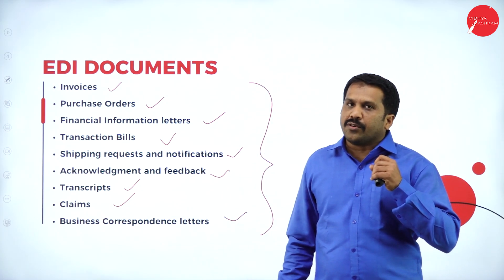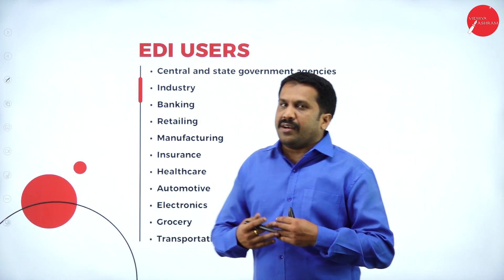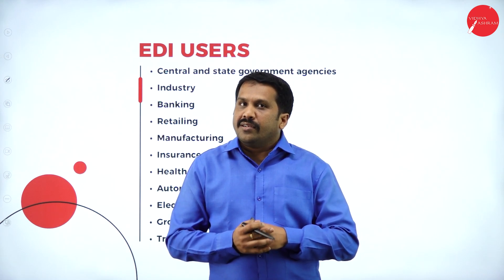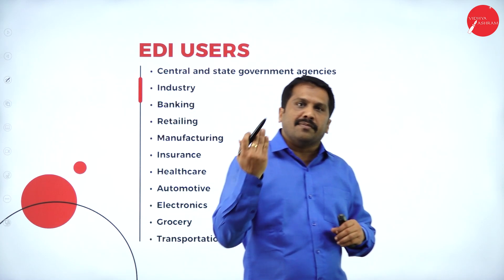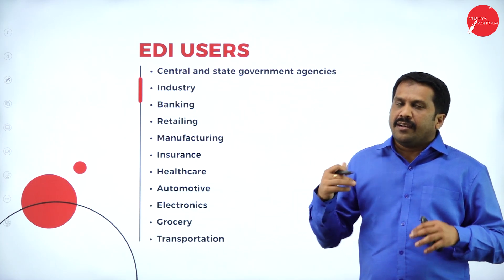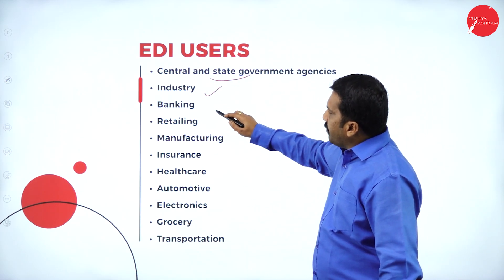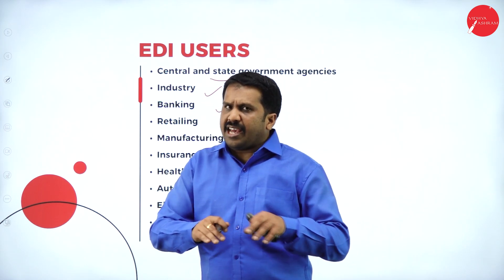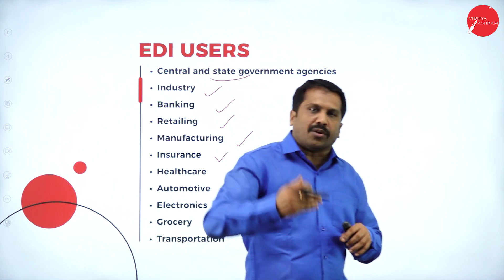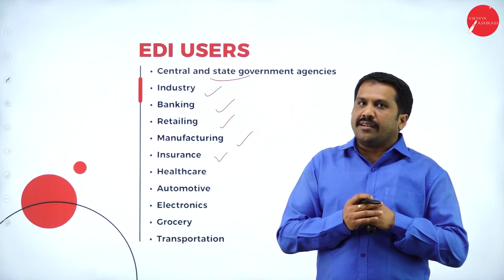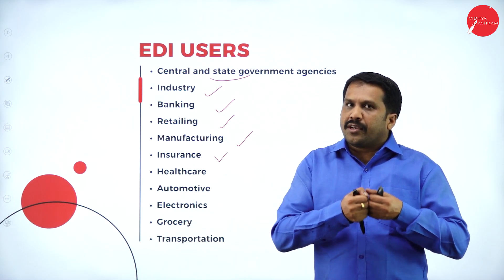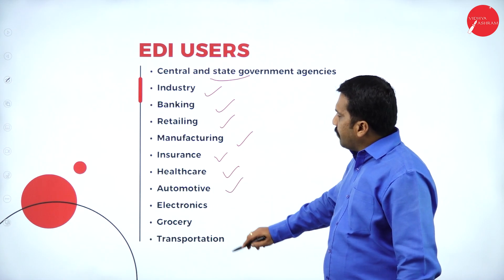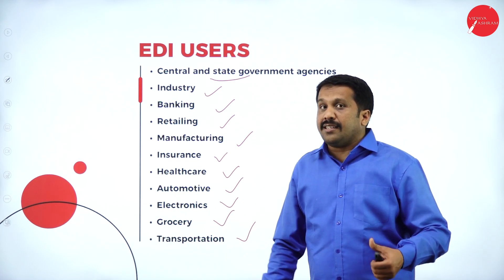Who are the EDI users? In this Zomato example, I am the user of EDI. The hotel owner is also a user of EDI. The chef also has a tab or device — he is also a user of EDI. Commonly, the users are all central and state governments, industries, banks, retail, manufacturers, insurance, healthcare, automotive, electronics, grocery, and transportation — these are the users of EDI.